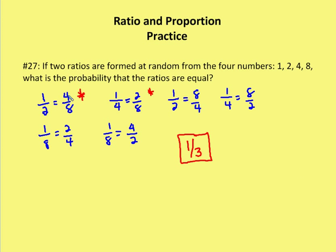We'll have 1 over 2 is equal to 4 over 8. 1 over 4 is equal to 2 over 8. 1 over 2 is equal to 8 over 4. 1 over 4 is equal to 8 over 2. 1 over 8 is equal to 2 over 4. And 1 over 8 is equal to 4 over 2. So if you're looking at this video or watching, you can stop and try this on your own to see what proportions you come up with and then come back and see if they match mine. So I have six different proportions.